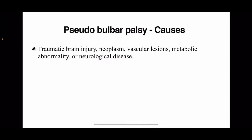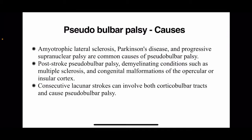Causes of pseudobulbar palsy include traumatic brain injury, neoplasm, vascular lesions, metabolic abnormalities, and certain neurological diseases. Amyotrophic lateral sclerosis, Parkinson's disease, and progressive supranuclear palsy have also been associated with pseudobulbar palsy. ALS in particular can be seen in both bulbar and pseudobulbar palsy. Post-stroke demyelinating diseases like multiple sclerosis, congenital malformations of the opercular or insular cortex, and lacunar infarcts involving both corticobulbar tracts can also cause pseudobulbar palsy.